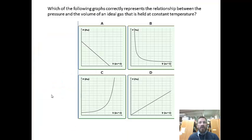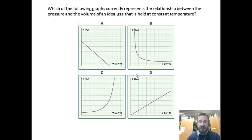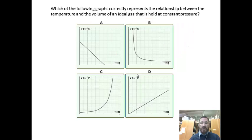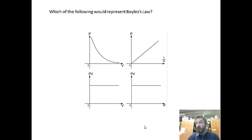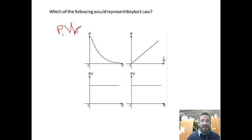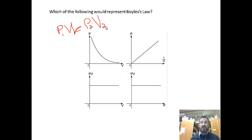Which of the following graphs correctly represents the relationship between pressure and volume of a gas held at constant temperature? From our discussion, you should pick B — the correct answer is B. Which graph correctly represents the relationship between temperature and volume of a gas held at constant temperature? For this one, you should select D. Which of the following would represent Boyle's Law? Remember, Boyle's Law is P1 times V1 equals P2 times V2, and pressure and volume have an inverse relationship — so you'd pick the graph that shows that curve.